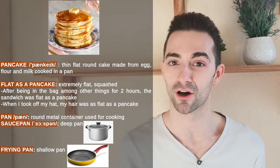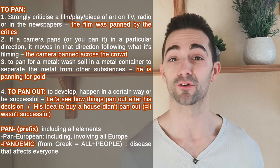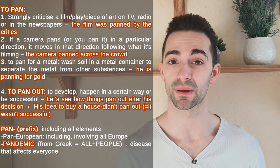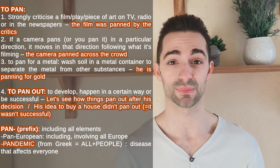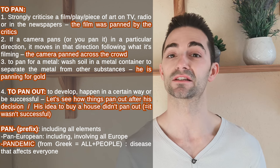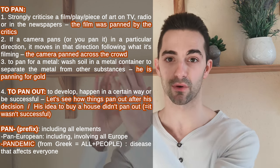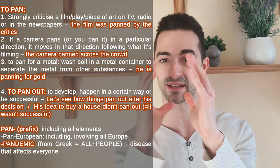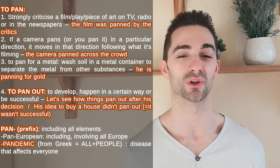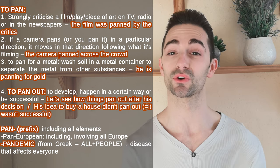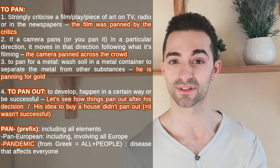But pan can also be a verb. To pan means to strongly criticise a piece of art, a film, or a play in the newspapers or on TV. If you pan a camera, or if it pans in a specific direction, it means that it follows the object that it's filming in that direction. You can also pan for a metal, which means that you take some soil and you wash it in order to separate the metal you're looking for from other substances.